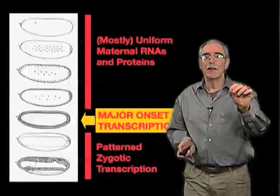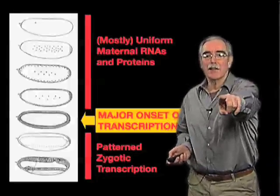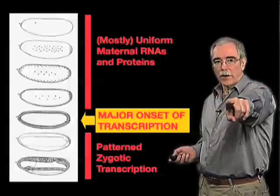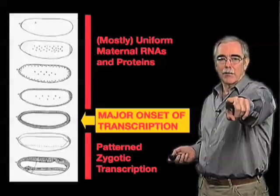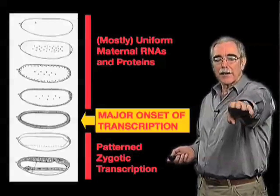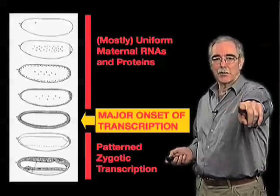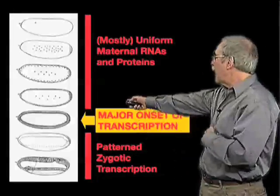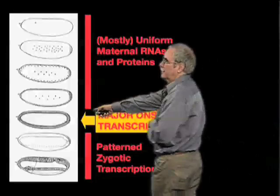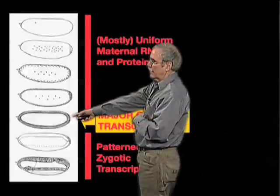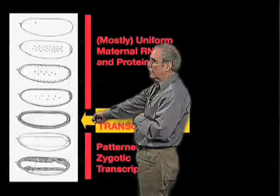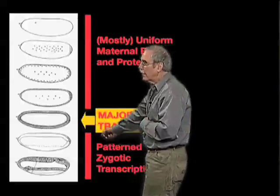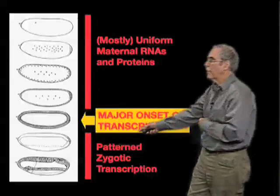We'll go back to this central idea: it's at this stage — the onset, right before gastrulation, right before these cell shape changes begin to occur — that individual genes come to be expressed in the embryo in specific patterns.